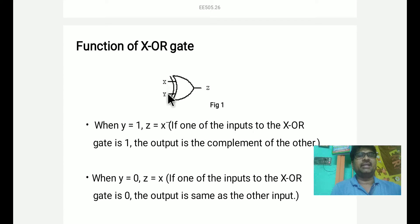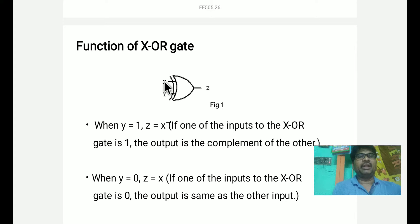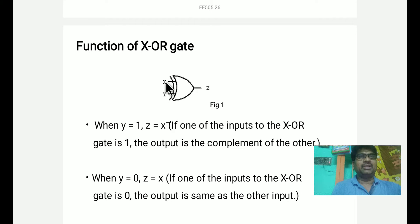XOR gate is a function with X, Y inputs and Z output. Equal inputs give 0, and unequal inputs give 1. So here, when Y is equal to 0 and Z equals X; when Y is equal to 1, Z is equal to X-bar.